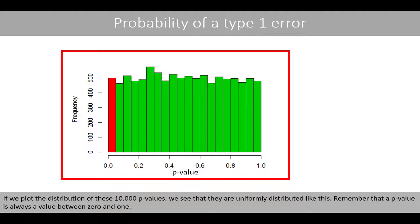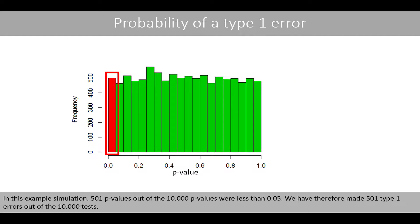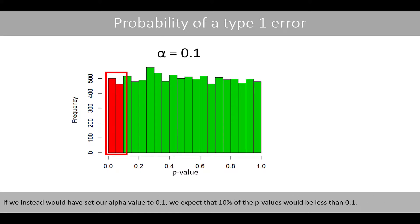Remember that a p-value is always a value between 0 and 1. Since we have 20 bars in this histogram with a width of 0.05, we expect that the bars have a height of 500. However, due to chance, there is some variation around 500. In this example simulation, 501 p-values out of the 10,000 were less than 0.05, so we made 501 type 1 errors out of the 10,000 tests. If we instead set our alpha value to 0.1, we expect that 10% of the p-values would be less than 0.1. In this simulation, 963 p-values out of the 10,000 were less than 0.1.